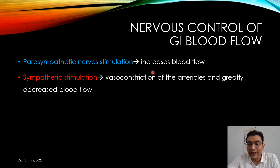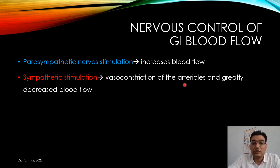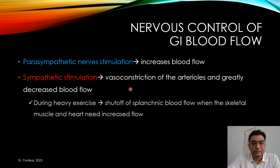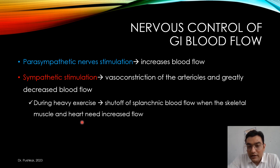The sympathetic nervous system activates the body for fight or flight. During exercise or fighting, the sympathetic nervous system activates. At those moments we are not eating, so the GI tract does not need blood. This leads to vasoconstriction of arterioles and decreased blood flow to the GI tract. During heavy exercise, sympathetic stimulation leads to shut-off of splanchnic blood flow.